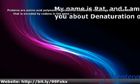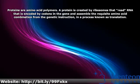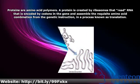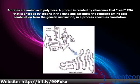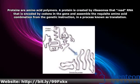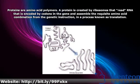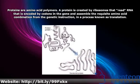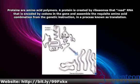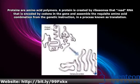Proteins are amino acid polymers. A protein is created by ribosomes that read RNA that is encoded by codons in the gene and assemble a requisite amino acid combination from the genetic construction, in a process known as translation.